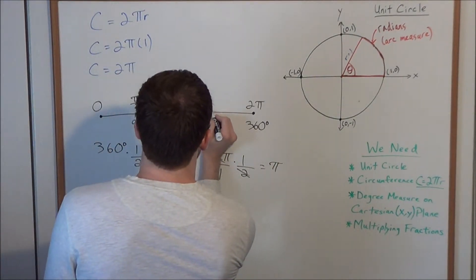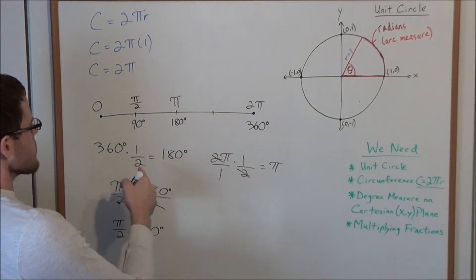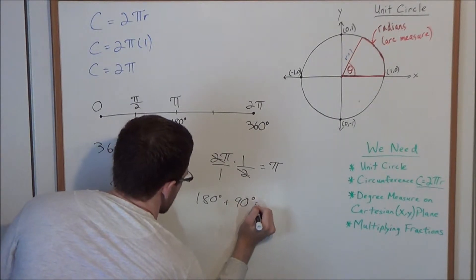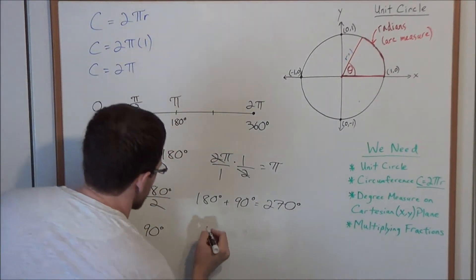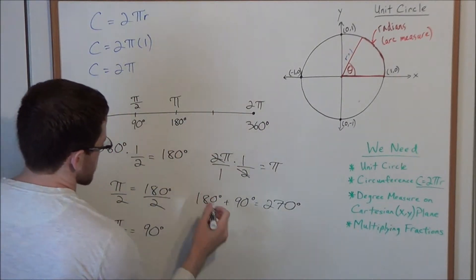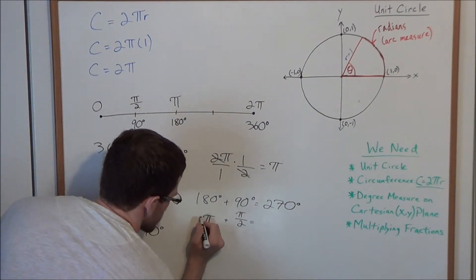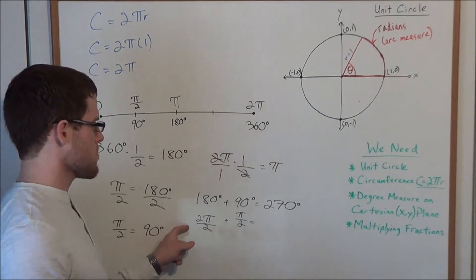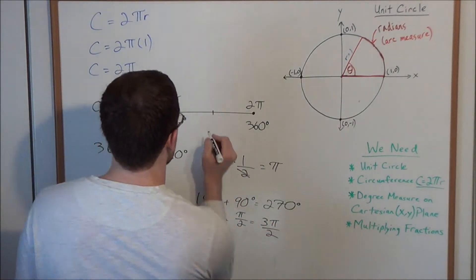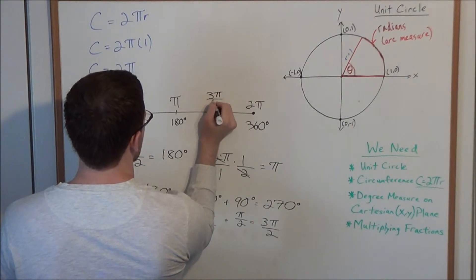And now we could also do this for some measurement halfway between 180 degrees and 360 degrees. Well, what happens if we do 180 degrees plus 90 degrees? This would be 270 degrees. So that means what if we did π radians, because this is equal to 180 degrees, plus, and now for 90 degrees we could look at π/2 radians. Well, we could use equivalent fractions now. π is really 2π/2, and now 2π/2 plus π/2 is 3π/2. So this tells us that at 270 degrees we also have 3π/2 radians.